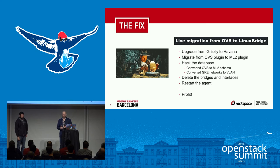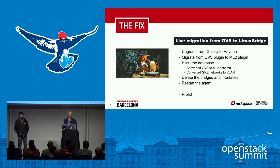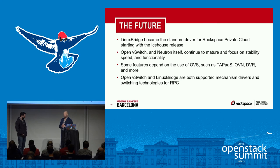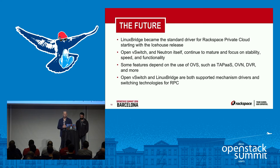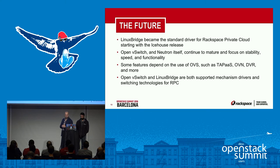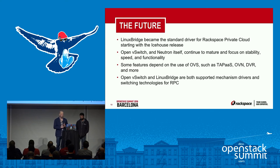With a consistent database schema from ML2, we could change the underlying plugin — update a few fields in the database, pull a few virtual interfaces out of their bridges, restart the agents, and suddenly the Linux bridge agent was building out the virtual networking infrastructure. This is important because the alternative may have been to redeploy a new cloud using Linux bridge, which is real painful for users. Nobody wants to snapshot instances and migrate them into a new cloud, and instability might make users shy away from OpenStack in general.